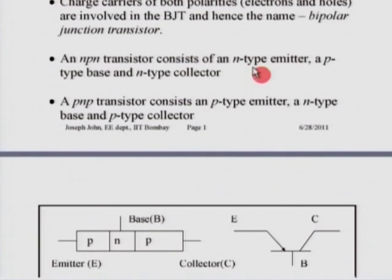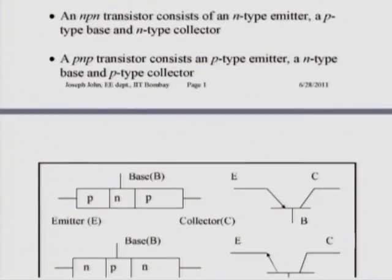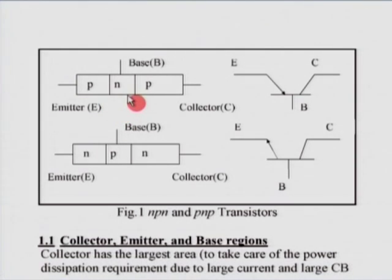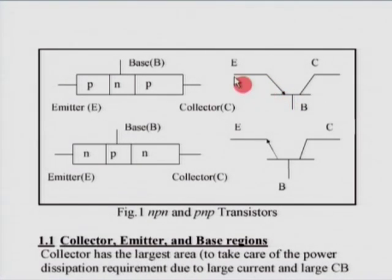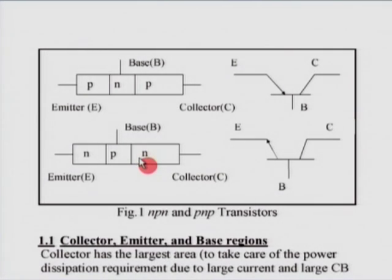What we have here is the basic structure. The first one is a PNP transistor — you can see a P-type emitter, an N-type base and a P-type collector — and this is the symbol of a PNP transistor. The arrow here indicates the actual direction of current. The emitter current flows into the device, and both the base current and collector current flow out of the device. An NPN transistor has an N-type emitter, a P-type base and an N-type collector, and the symbol for the NPN transistor is shown here.